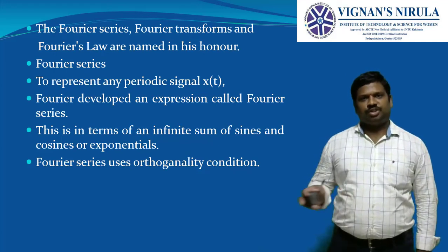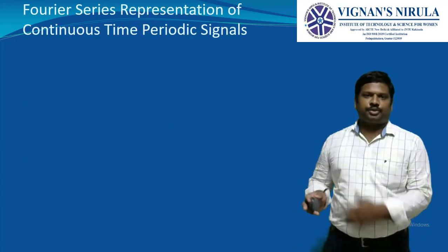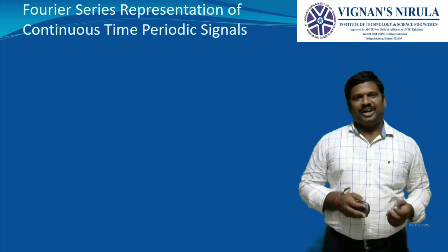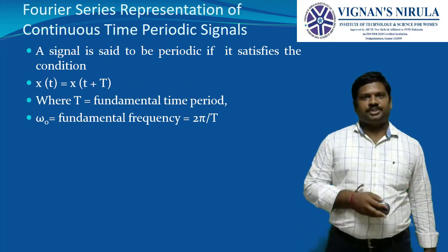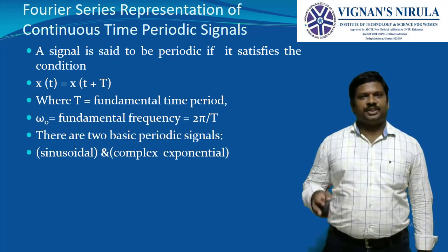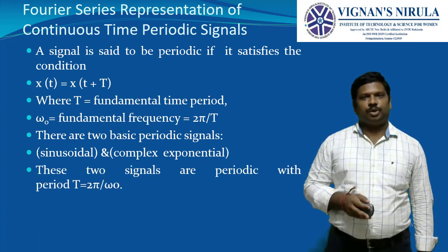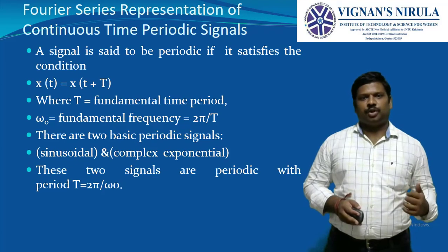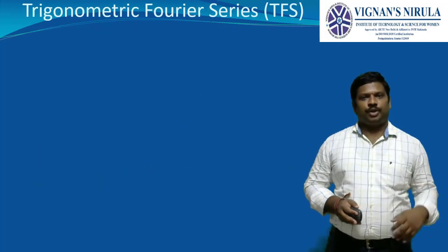The Fourier series uses the concept of orthogonal conditions. For continuous-time periodic signals, a signal is said to be periodic if it satisfies x(t) = x(t + T), where T is the fundamental period and ω₀ is the fundamental frequency, equal to 2π/T. There are two basic periodic signals: sinusoidal and complex exponential, with periodicity equal to 2π/ω₀. Using sinusoids, we develop the trigonometric Fourier series; using complex exponentials, we develop the exponential Fourier series.